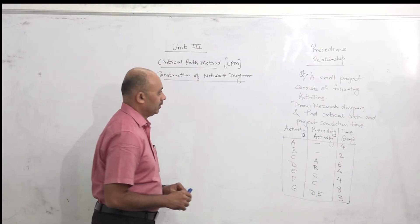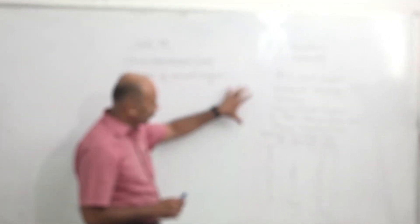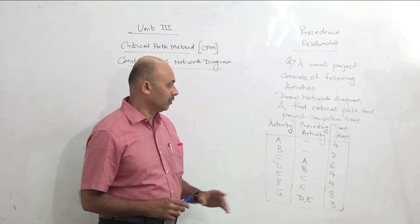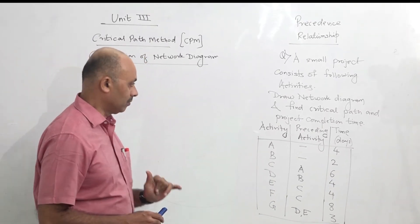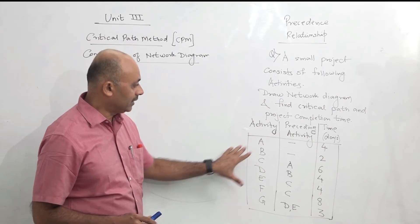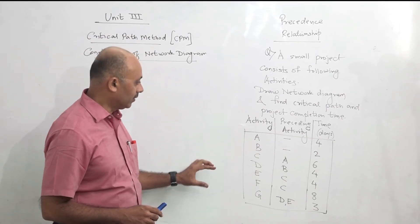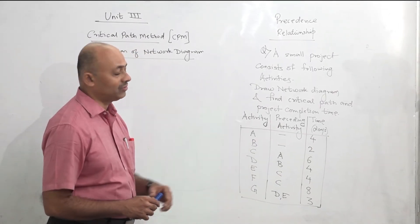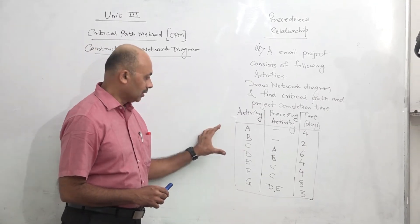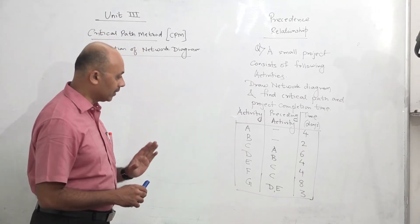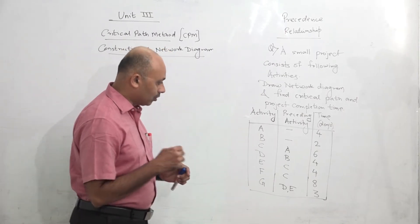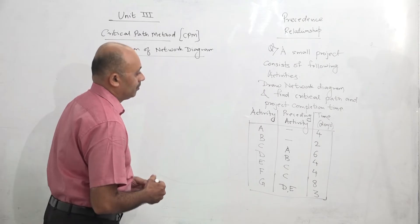In this question, a small project consists of following activities — draw a network diagram, find the critical path, and project completion time. Here, activity and preceding activity are given. That is why this kind of relationship is called precedence relationship — this is not a node relationship. The numbers of the nodes are not given, but activity and preceding activity are given.